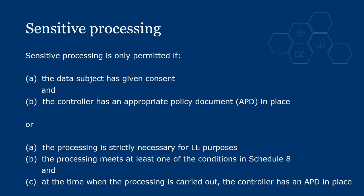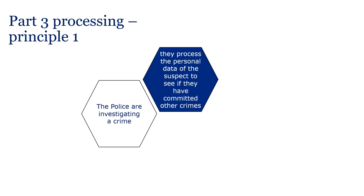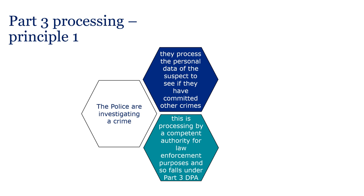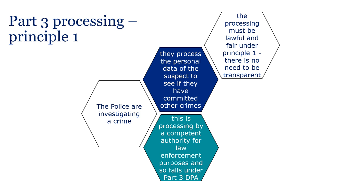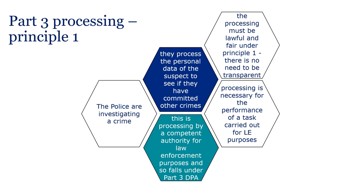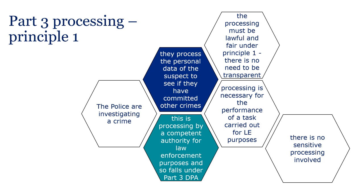Remember that in circumstances involving law enforcement processing, consent can be problematic and difficult to obtain. Let's look at two examples. The police are investigating a crime and process the personal data of the suspect to see if they have committed other crimes. This is processing by a competent authority for law enforcement purposes and so falls under Part 3 of the DPA. The processing must be lawful and fair under Principle 1; there is no need to be transparent. The processing is based on law and the police consider that processing is necessary for the performance of a task carried out for law enforcement purposes. They do not want or need to ask for the consent of the individual — in this situation the police can't process by consent because the data subject would be likely to refuse consent if they thought it could prevent the investigation. There is no sensitive processing involved.